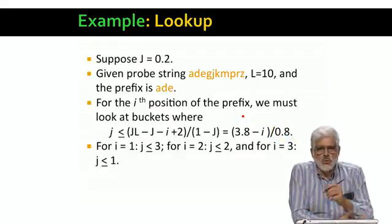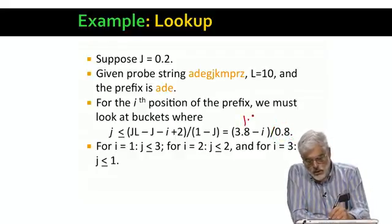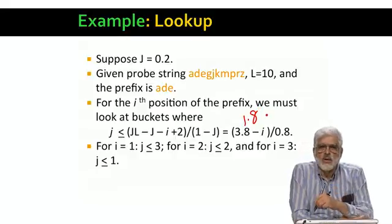For i equals 2, we get 1.8 divided by 0.8, or 2 and a quarter. Thus J has to be 1 or 2.